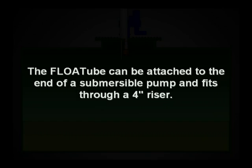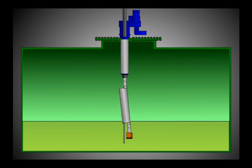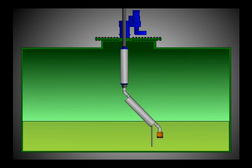The float tube will improve the quality of your fuel. Installation. A float tube can be attached to the end of a submersible pump and fits through a four-inch riser. A float tube installation is as easy as a conventional pump replacement.